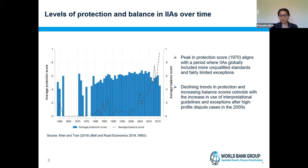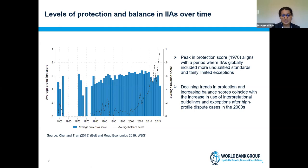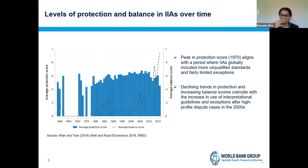Over the next few slides I'll run through examples of the kind of analysis we did and how data using the EDIT database can be presented. At the cumulative level, for our 21 BRI countries, the blue bars show the level of investment protection and the dotted line shows the balance score. There's a peak in the period when there were relatively unqualified standards with fewer exceptions included. Post-2000s we see a slight decline in the protection score but a substantial increase in the balance score — reflecting the high-profile disputes of the 2000s and a greater number of interpretation guidelines and exceptions being included.